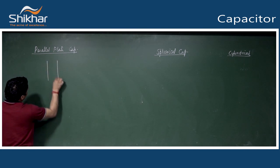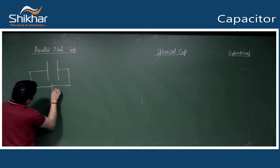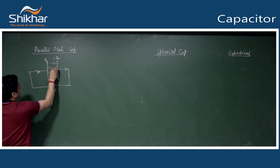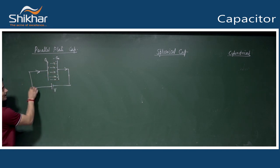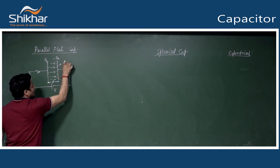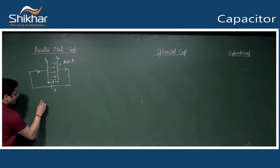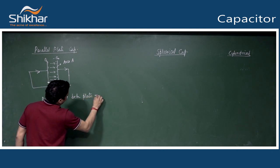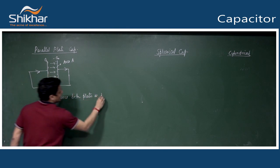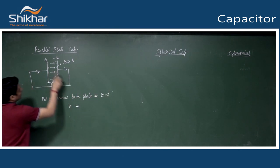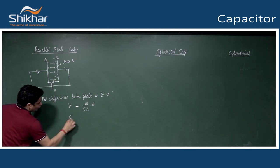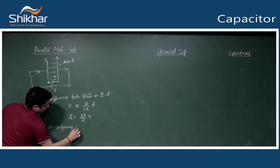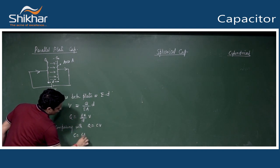The approach for finding capacitance is the same for all three types: apply voltage, charge Q flows to one plate and -Q to the other, an electric field develops. For parallel plate capacitor with separation D and area A: potential difference V = E·D = (Q/ε₀A)·D. So Q = (ε₀A/D)·V, giving capacitance C = ε₀A/D.